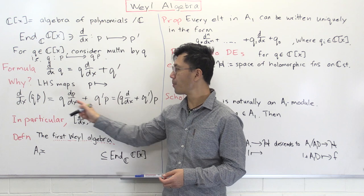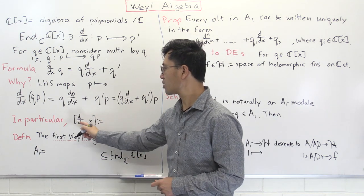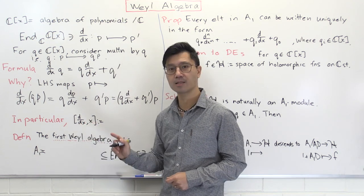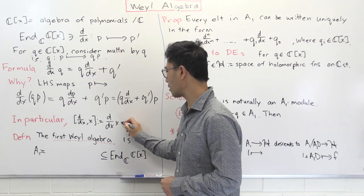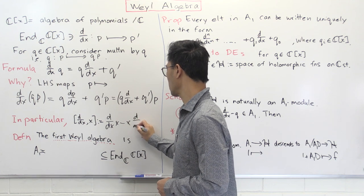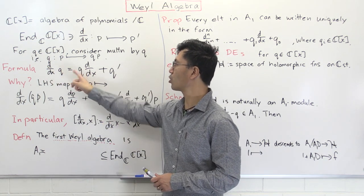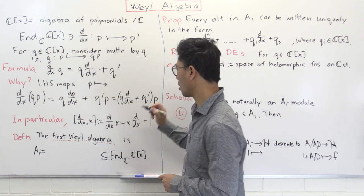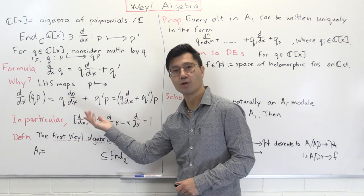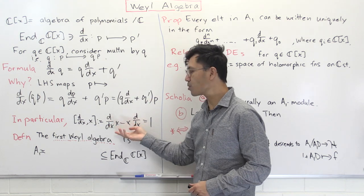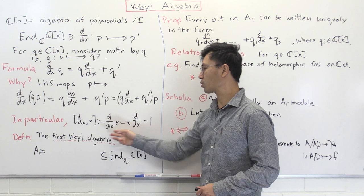A very special case occurs when you pick q to be the polynomial x. We look at what's called the commutator of the two operators d/dx and x: that's d/dx · x minus x · d/dx. Setting q = x, we get q' = 1. So the commutator of d/dx and x is equal to 1. The commutator is important because when it equals zero, the two elements commute. In this case they don't commute — in fact the commutator is equal to 1.